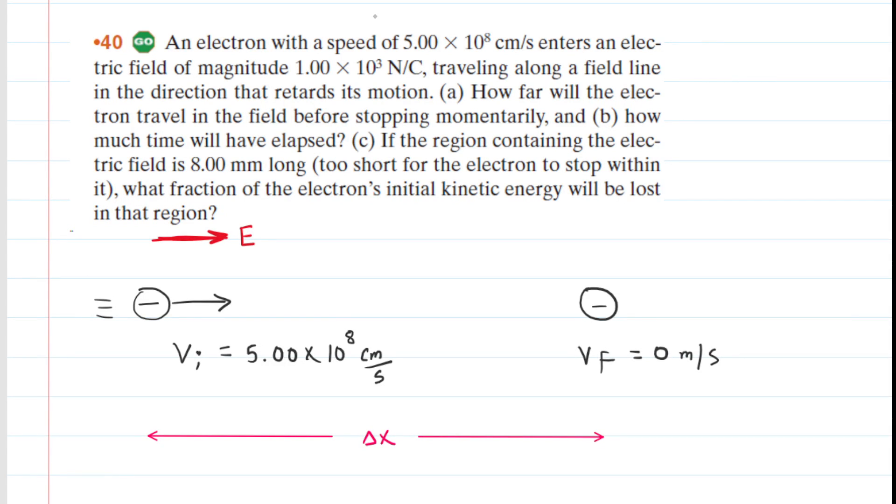If you haven't done so yet, pause the video and reread the problem before listening on. We have an electron with an initial velocity of 5×10⁸ cm per second, and it's traveling through an electric field.